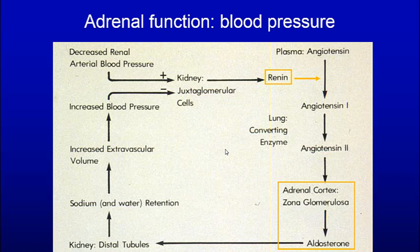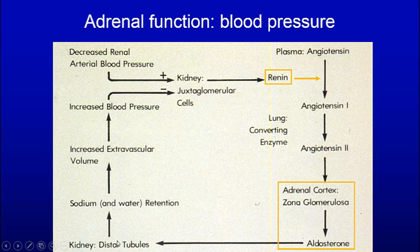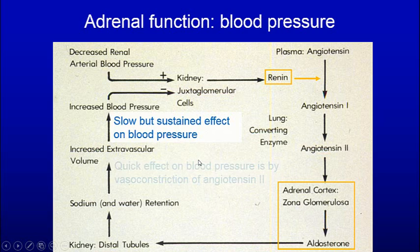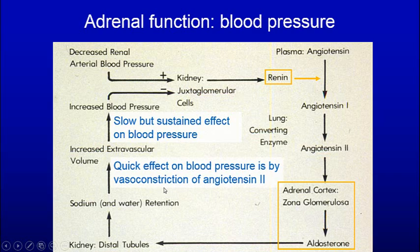If we look at adrenal function and blood pressure regulation, you can see the kidney produces renin, which causes angiotensin I to go to angiotensin II, and that causes the adrenal cortex to secrete aldosterone from the glomerulosa. This stimulates the distal tubule of the kidney to reabsorb sodium and water, increasing extravascular fluid and blood pressure. This is a slow but sustained effect. In contrast, a quick effect on blood pressure is vasoconstriction by angiotensin II itself, while the adrenal route provides a more sustained effect.